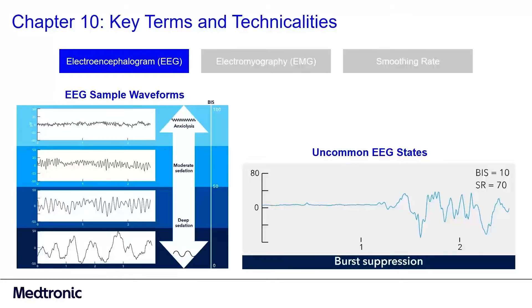The BIS monitor tracks and displays suppression ratio, which is the percent of time in the last minute that the EEG signal is considered suppressed.